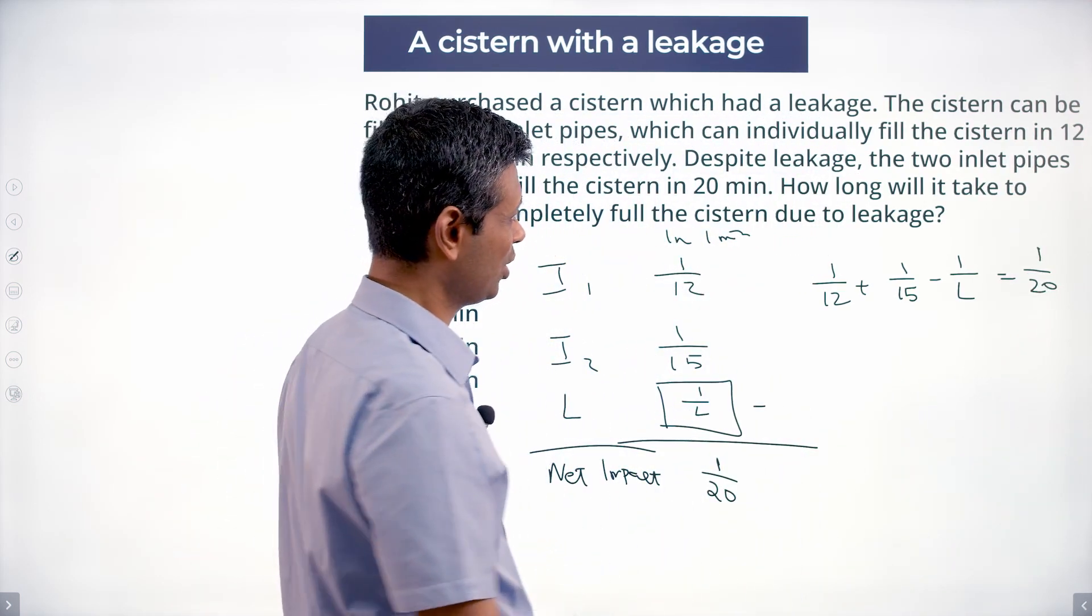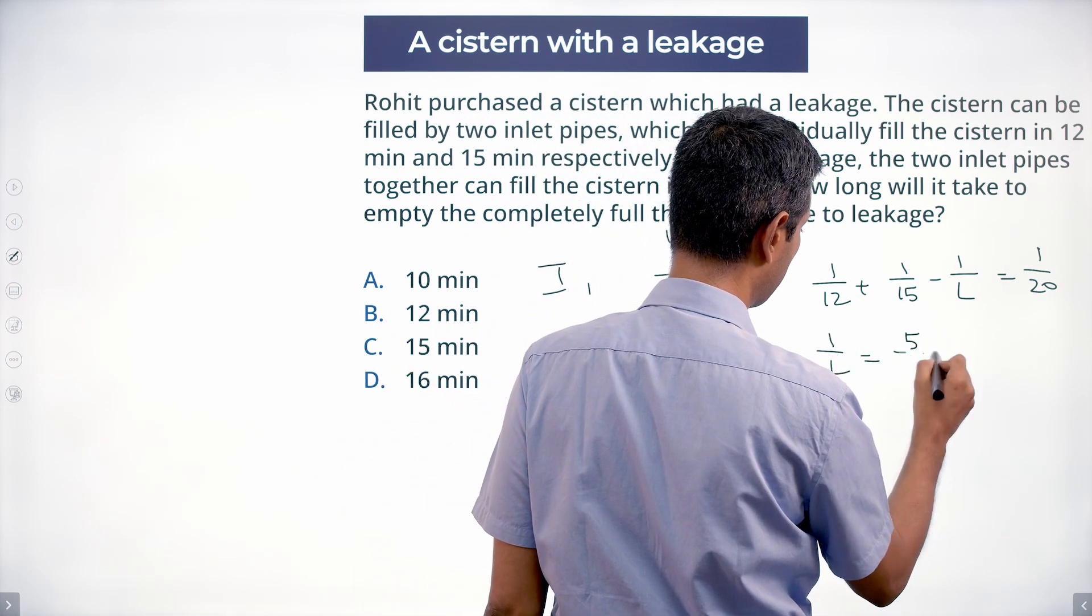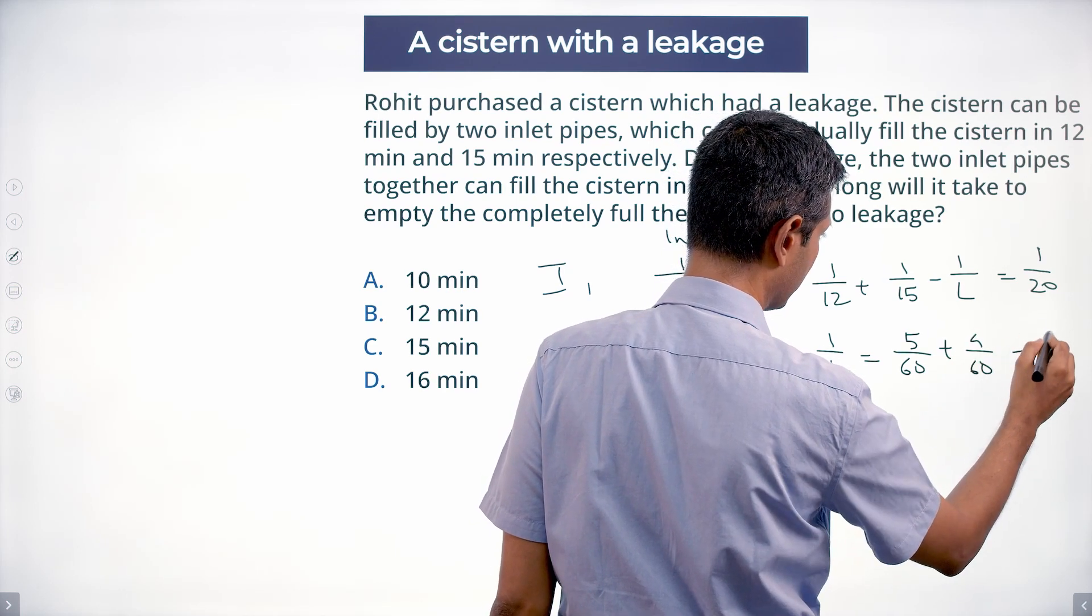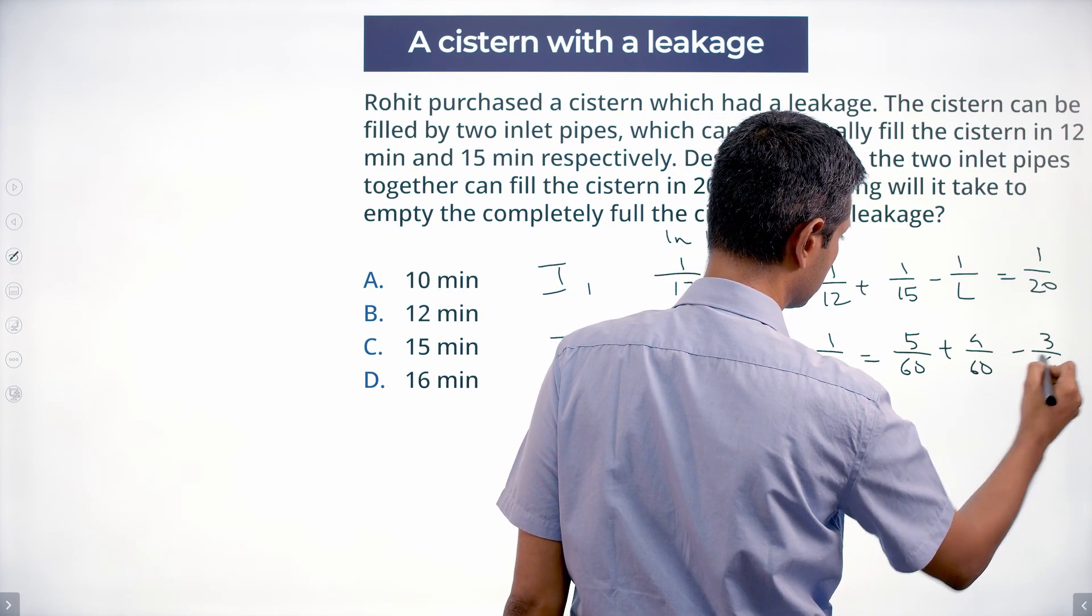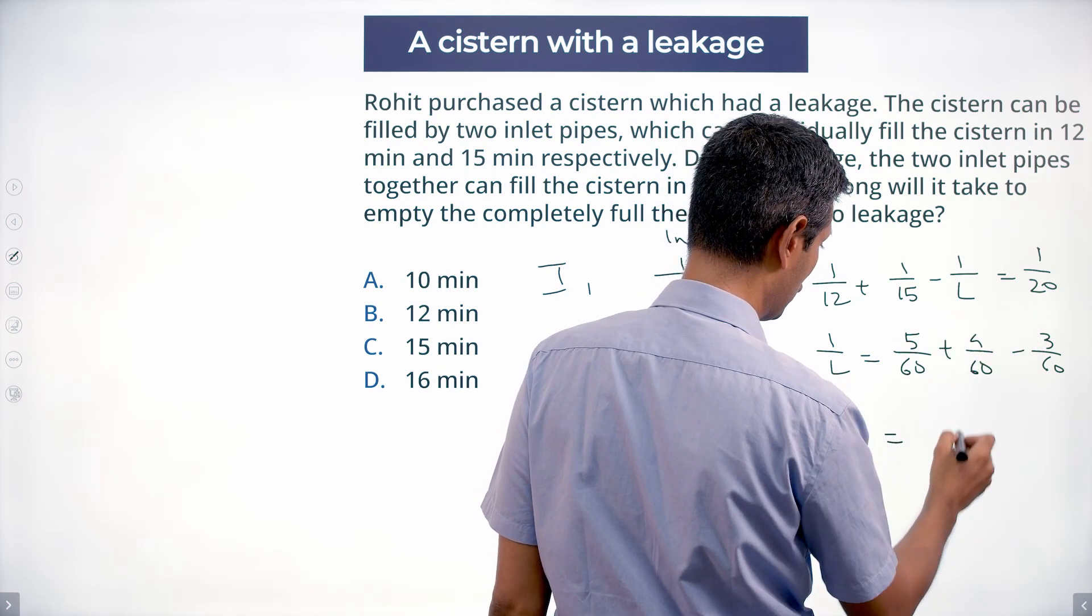Rearranging this, one by L is one by twelve, writing it as five by sixty, plus four by sixty minus three by sixty. One by L: five plus four is nine, nine minus three is six,